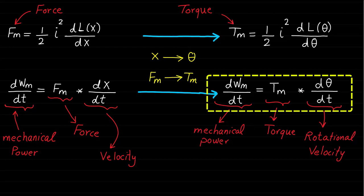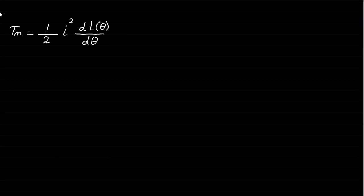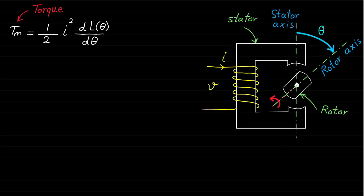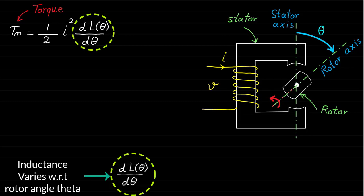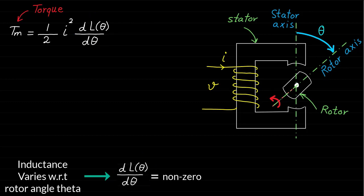Now, let's focus on the torque expression. This torque expression shows that if the magnetic system is excited by the current I, the torque can be developed only if the inductance changes or varies with respect to the rotor angle theta. The rate of change of inductance dL(θ)/dθ will be non-zero, and therefore the torque will be non-zero as well.